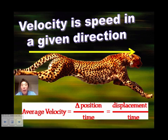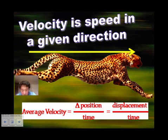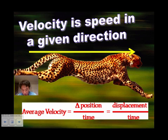Velocity is speed in a given direction. If you look above the cheetah's head, you can see an arrow. Whenever there is something with direction, that means it is a vector.